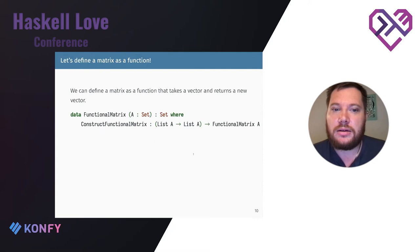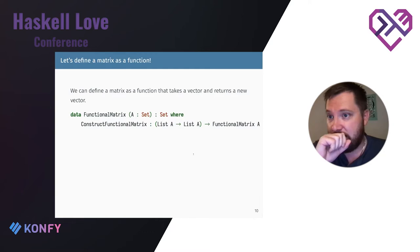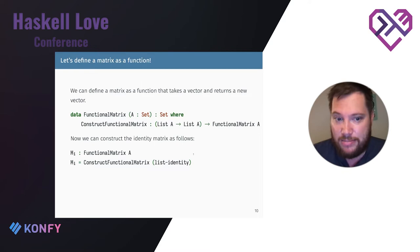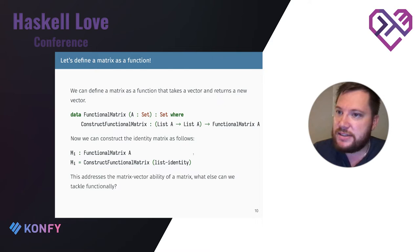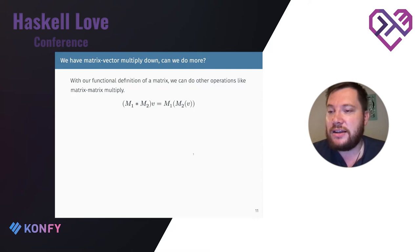Now let's codify this in a data type. We define a functional matrix that takes as its parameter a function from list to list and returns a functional matrix. We can construct an identity matrix using the list identity function — we're really just dealing with a wrapper. The three base operations were: applying a matrix (encoded in the data structure), matrix-matrix multiplication, and transposing.